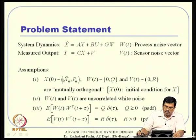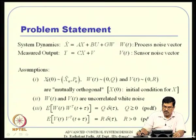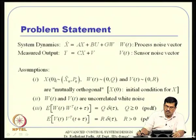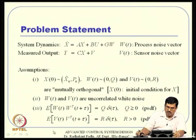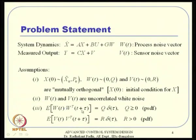Before proceeding, here are the assumptions. The initial condition X(0) ~ (X-tilde_0, P_0), W ~ (0, Q), and V ~ (0, R), where the first element is the mean and the second is the covariance matrix. So X(0) has mean X-tilde_0 and covariance P_0; W(t) has zero mean and covariance Q. The covariance is defined as E[W(t)*W(τ)^T] = Q*δ(t−τ), meaning at the same time it equals Q, and at different times it is zero.